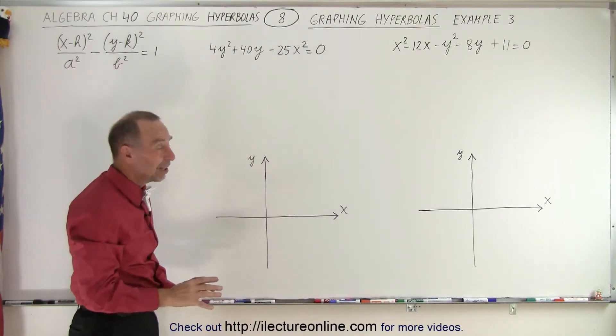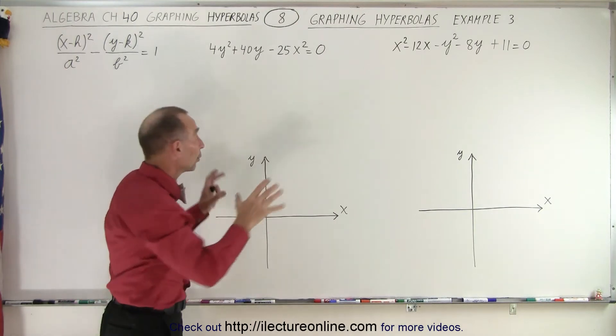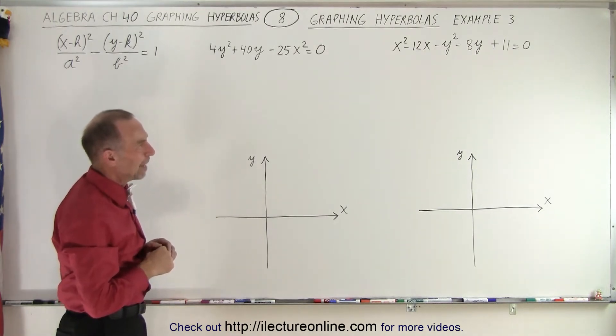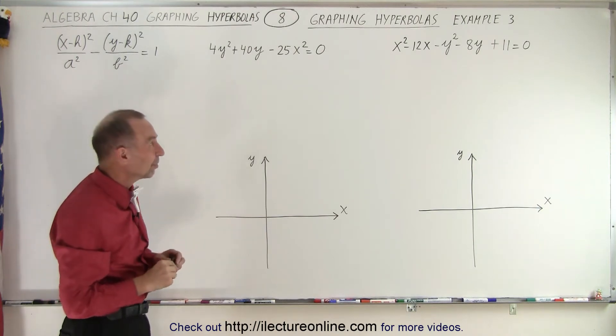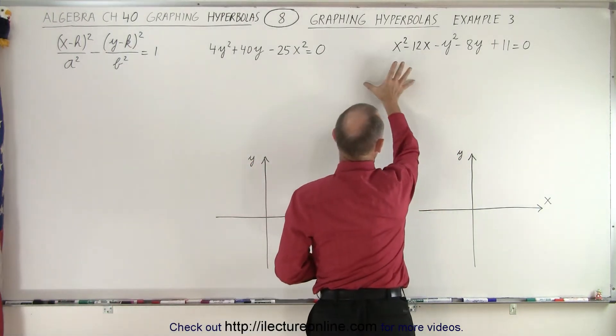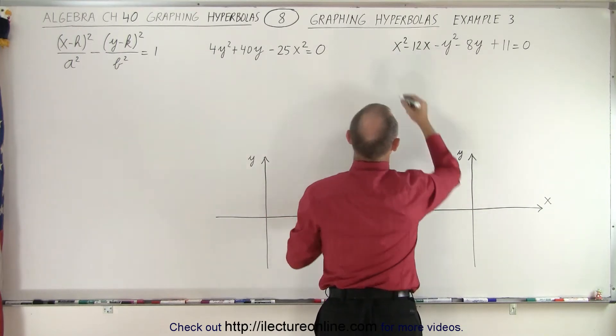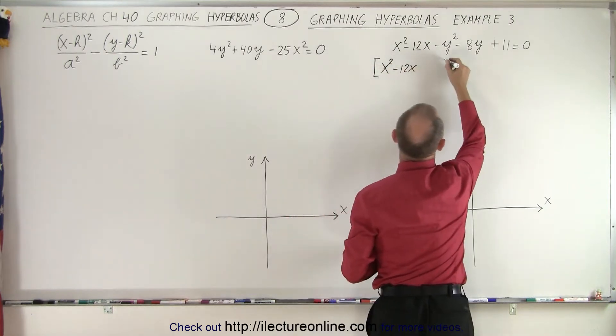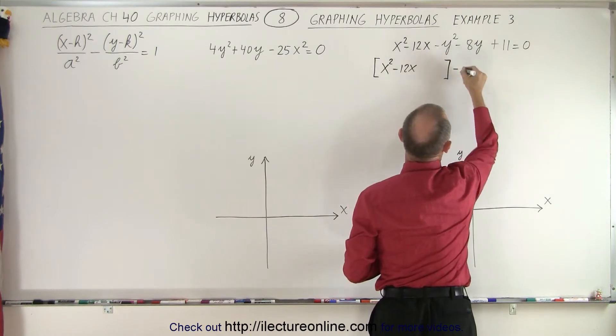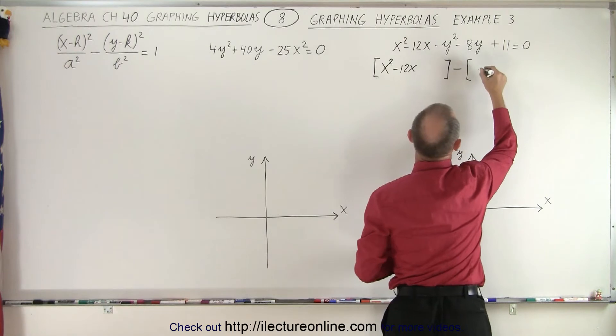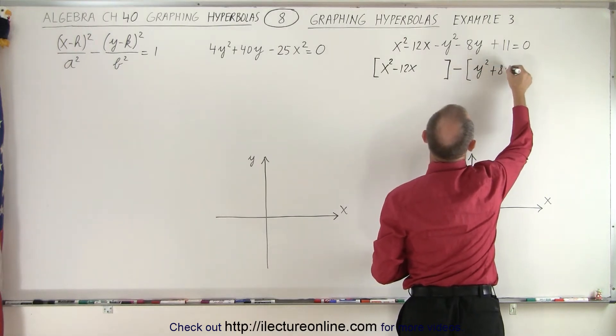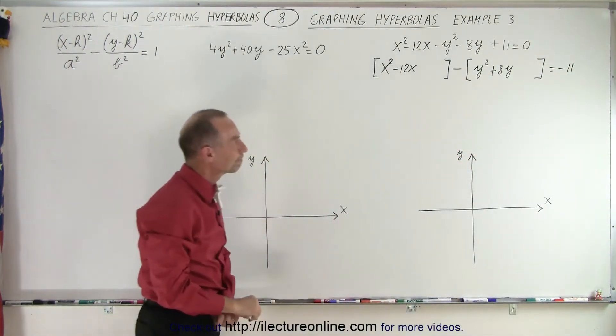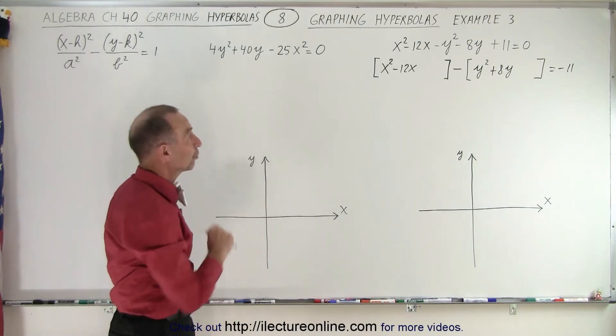Which means that we're going to try to write it into this format, which makes it easier to graph. So how do we do that? We can use the same technique for ellipses. What we're going to do here is put some brackets down and separate the x and the y variables. So here we're going to write a bracket: x-square minus 12x. Leave some room. Now notice there's a negative there and a negative there. I'm going to factor out the negative and put that in the box here. So we have y-square plus 8y. Again, leave some room. Equals negative 11 because we want the constants over to the right.